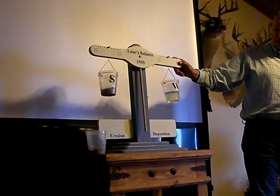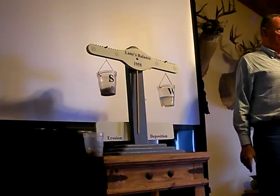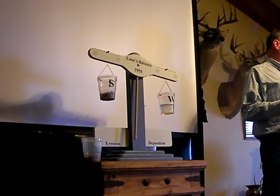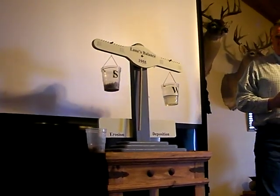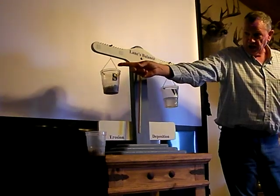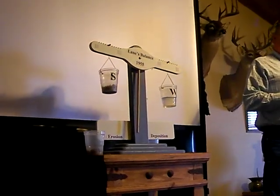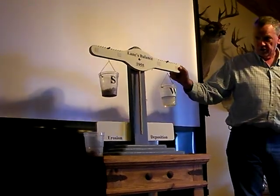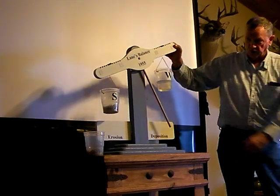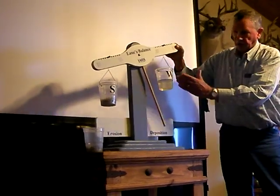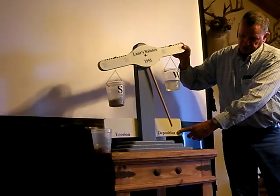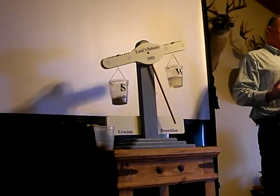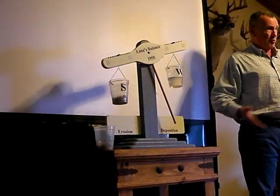On the other hand, if something's happening in the watershed — let's say a big-time mine or construction — something that adds a lot of sediment, if a lot of sediment is added to the river without a corresponding increase in water, then it's going to set up the balance the other way. Too much sediment, not enough water to move it, and so it's going to set up for deposition. Too much water causes erosion; too much sediment causes it to build up.